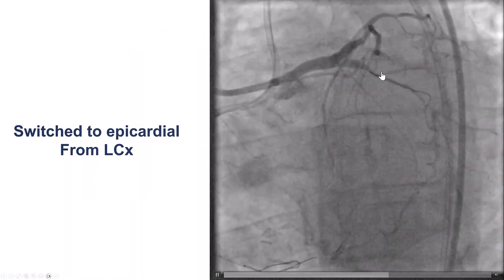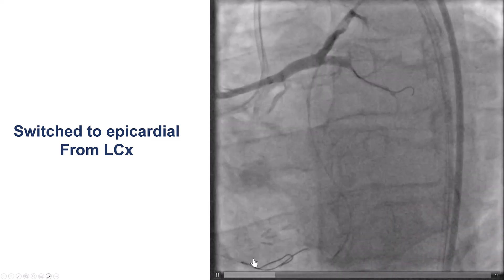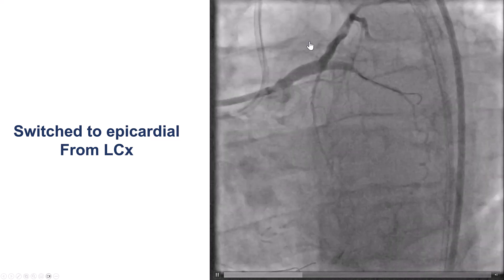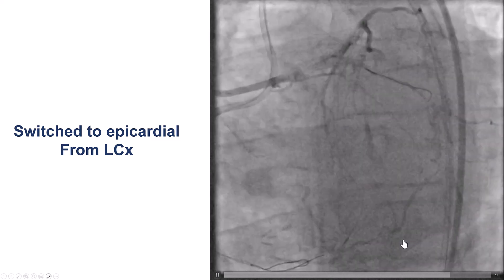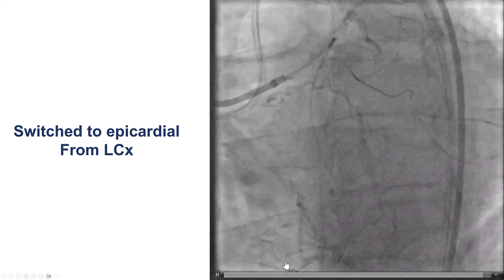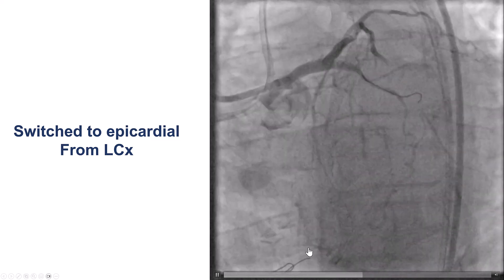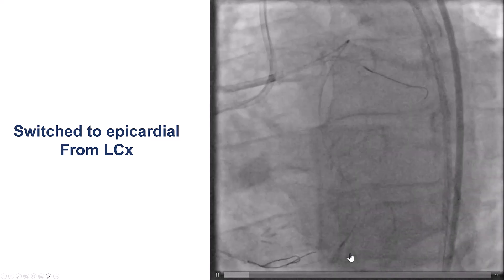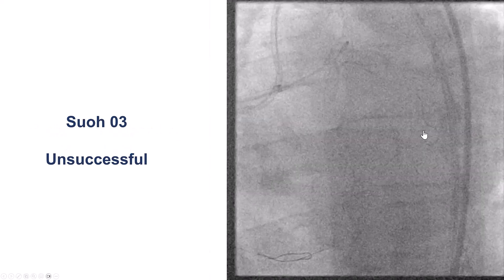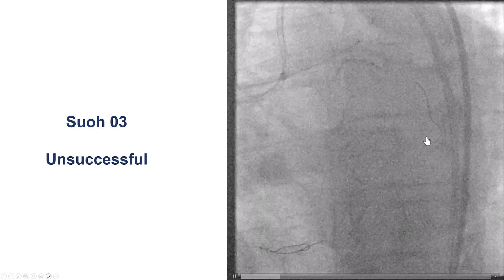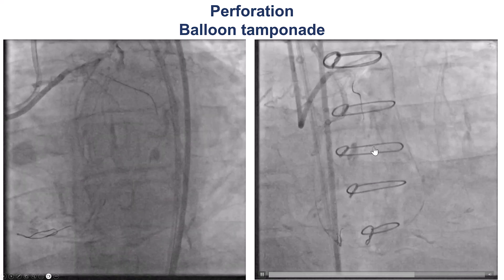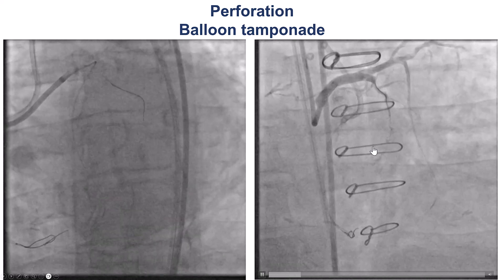We then debated whether we should just leave it, do the STAR technique, or try the epicardial. The epicardial was admittedly a fairly complex branch — coming from the circumflex, small size, and fairly tortuous. And this is the key question: how far should one push to try to get complete revascularization? We do want to recanalize both branches, but there's also risk involved, especially when doing retrograde through epicardial collaterals. We tried a SUO3 wire, which is fairly soft and atraumatic. However, we were unable to get through, and on the next injection we now have a perforation of this epicardial collateral.